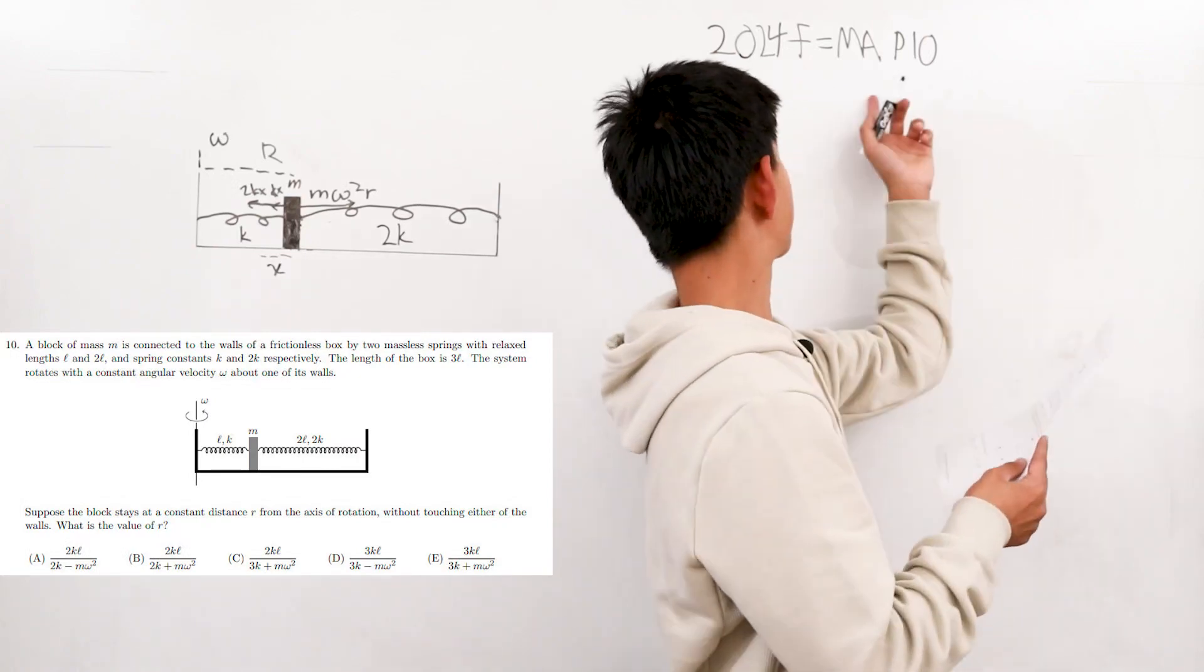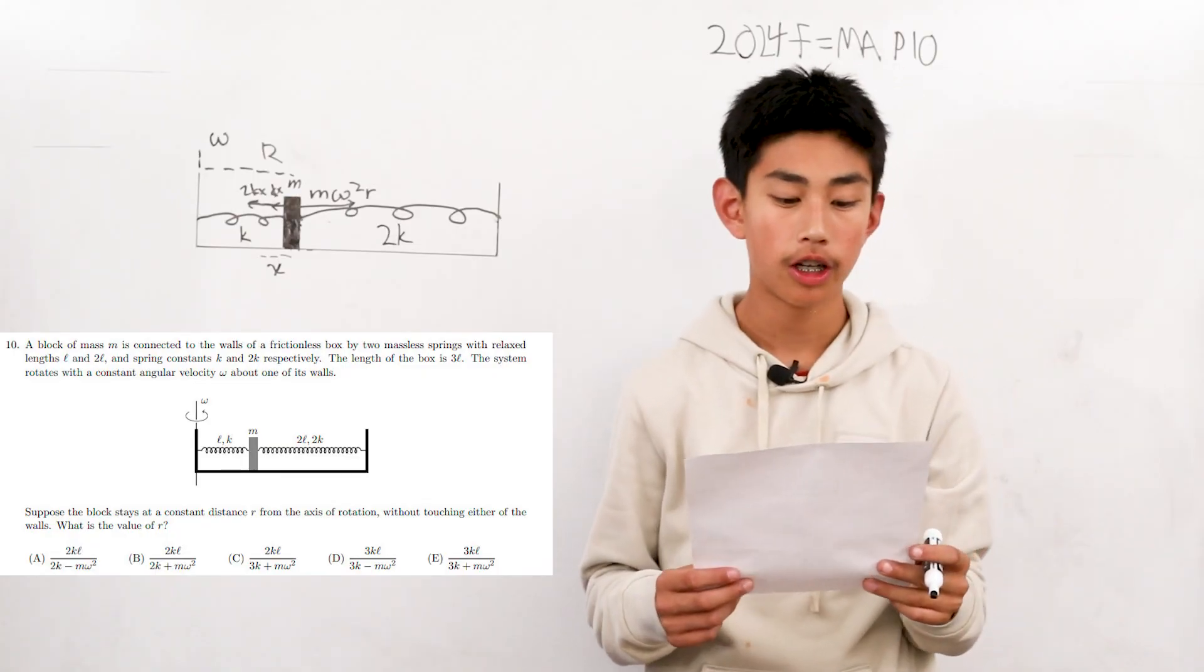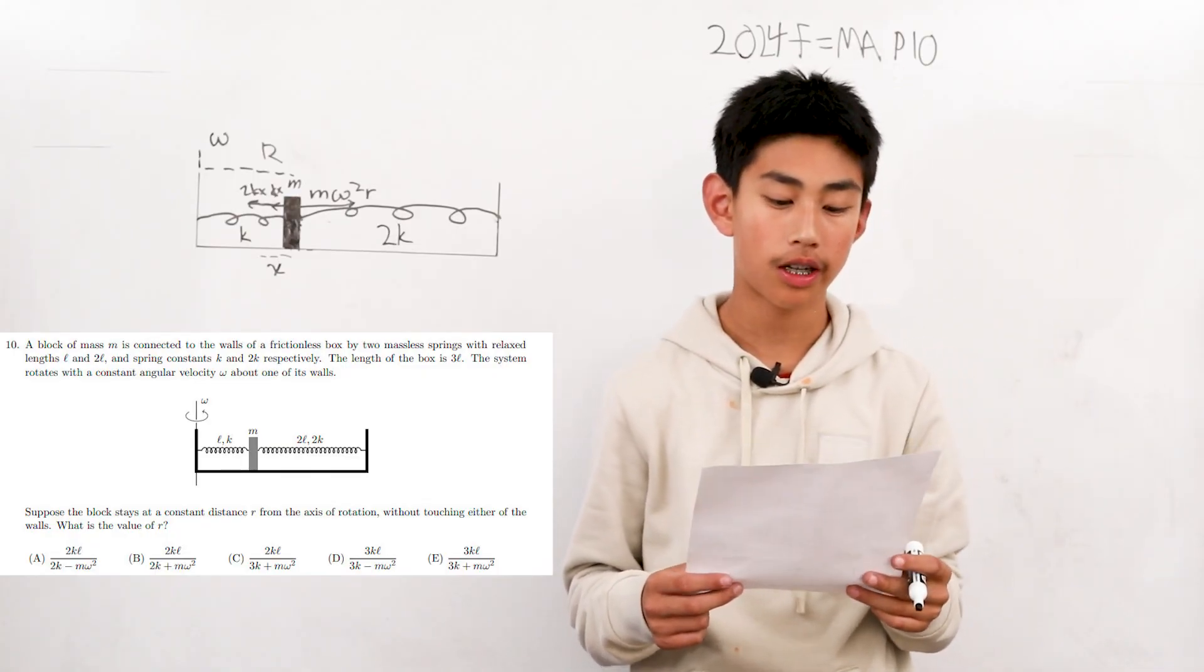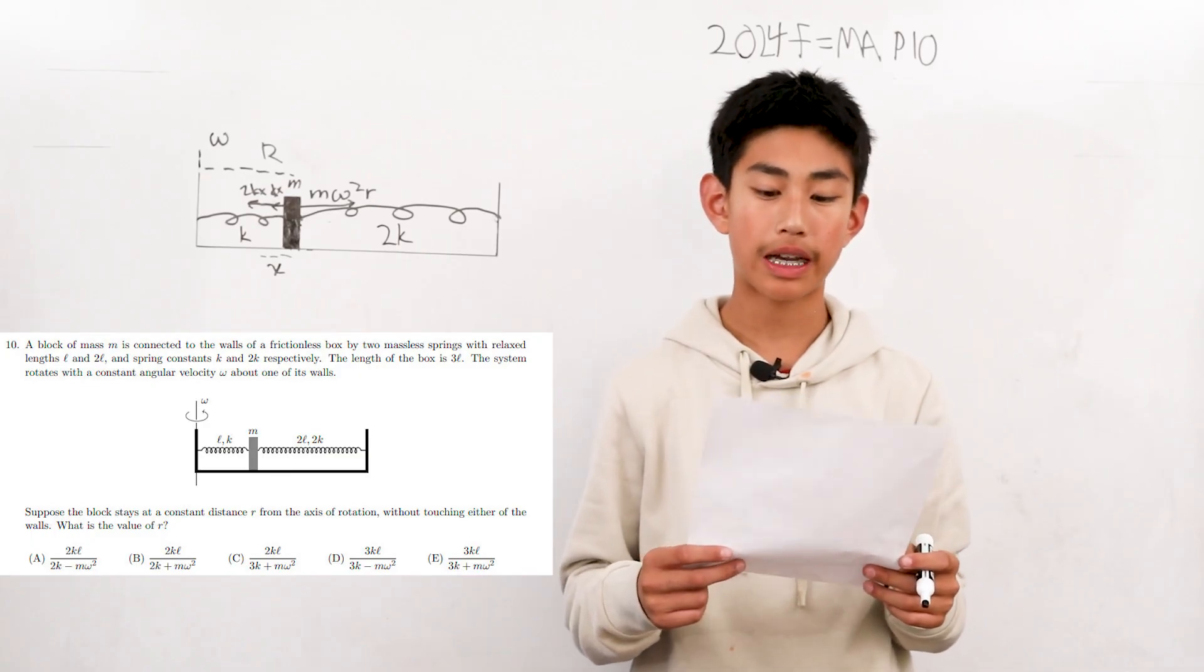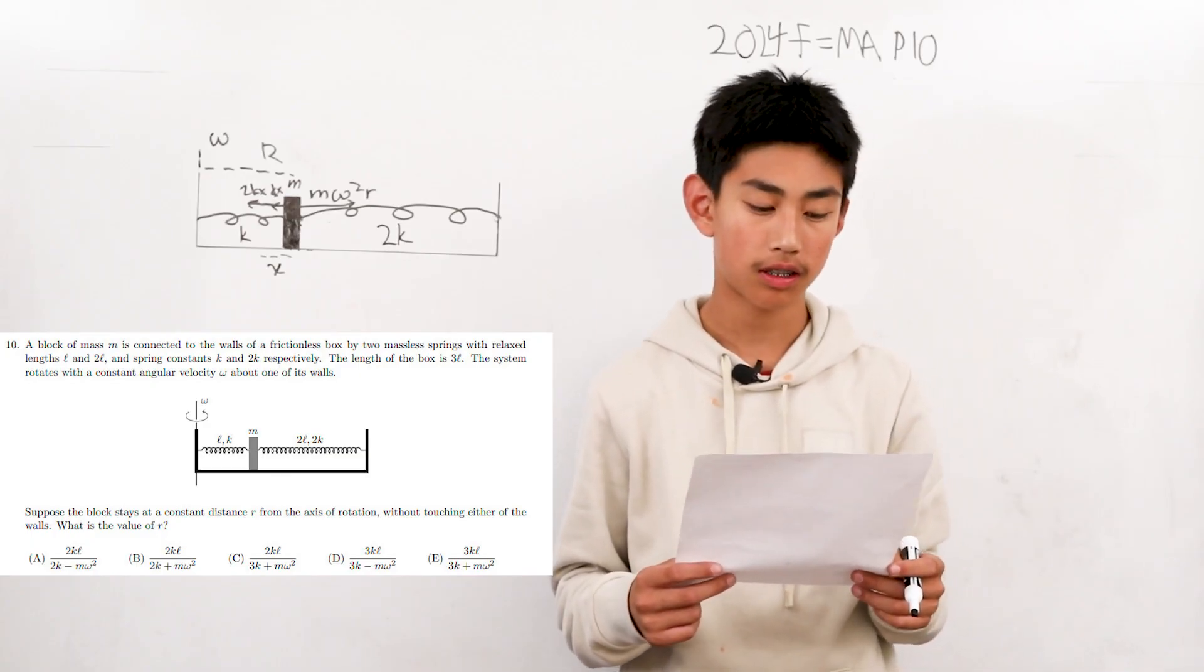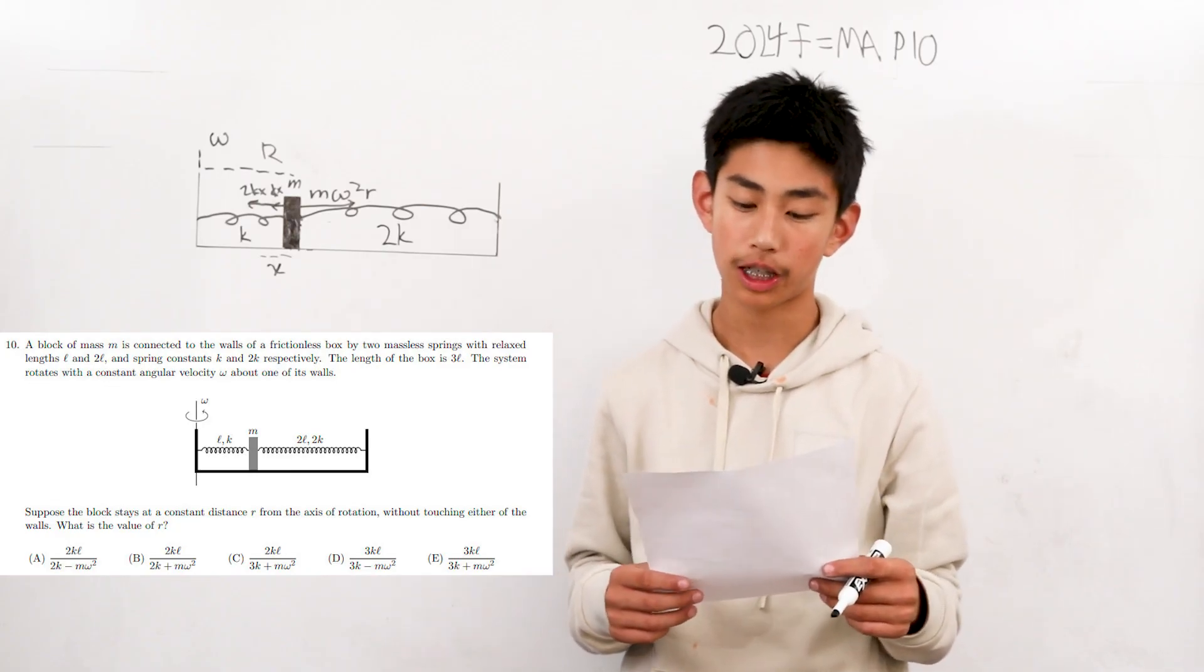We're solving problem 10 from the 2024 F equals MA exam. A block of mass M is connected to the walls of a frictionless box by two massless springs with relaxed lengths L and 2L and spring constants K and 2K respectively.